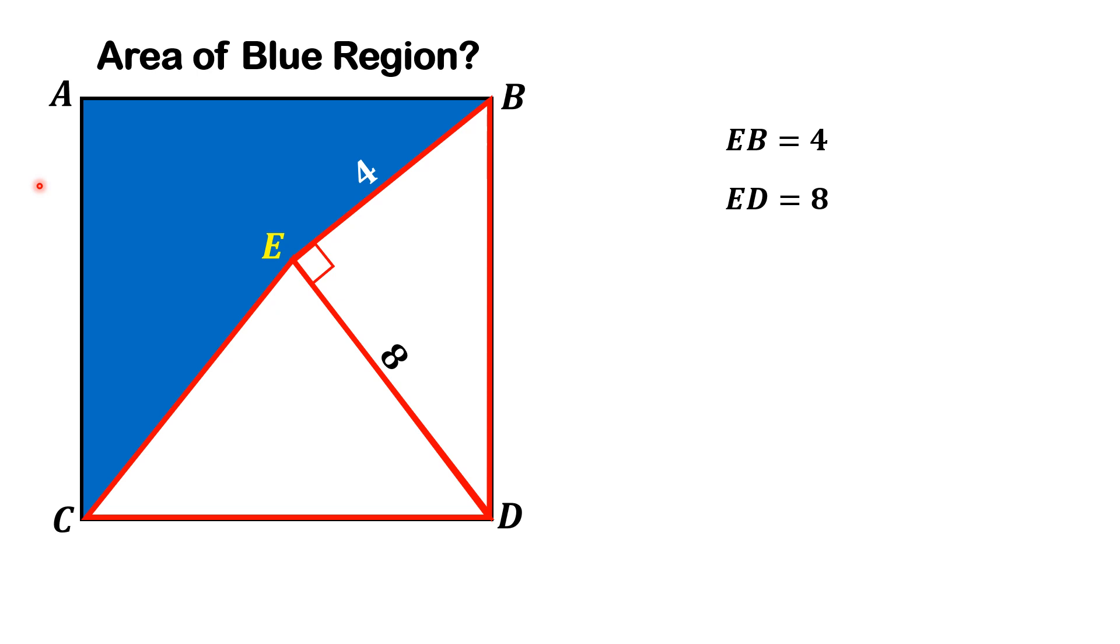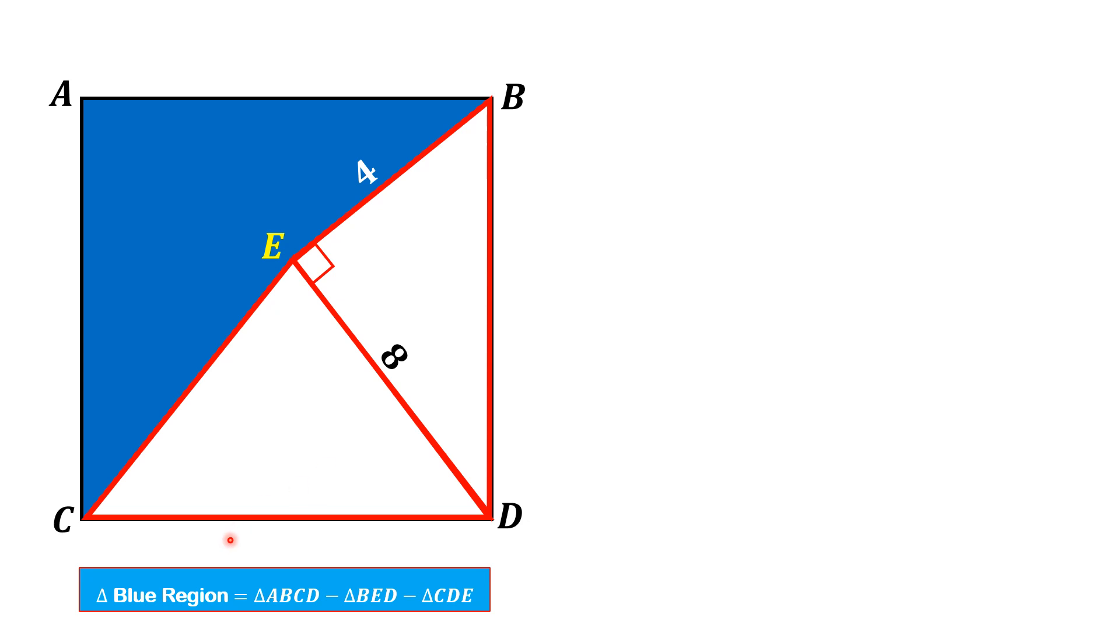Now let me move towards the solution. The area of this blue region is equal to the area of this whole square minus area of triangle ECD minus area of right triangle BED. So this is what the mechanism will be.